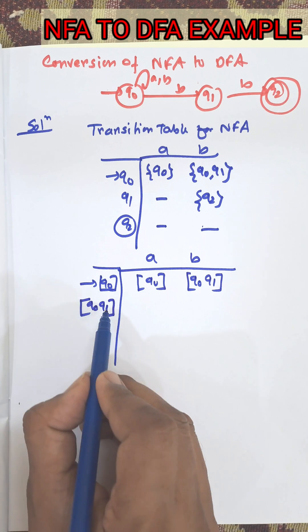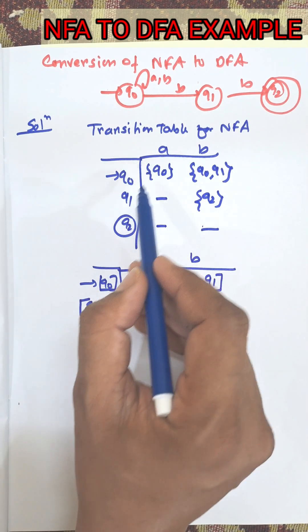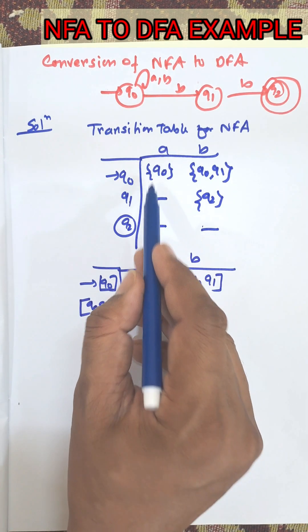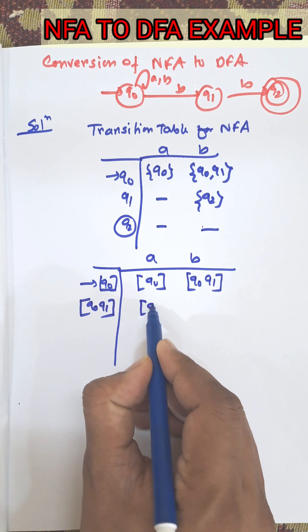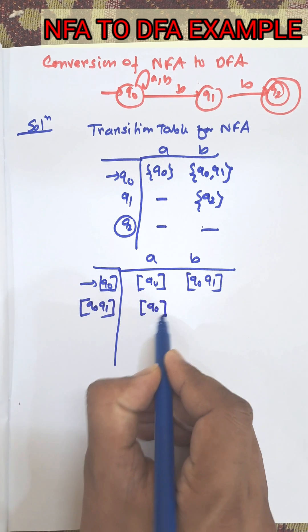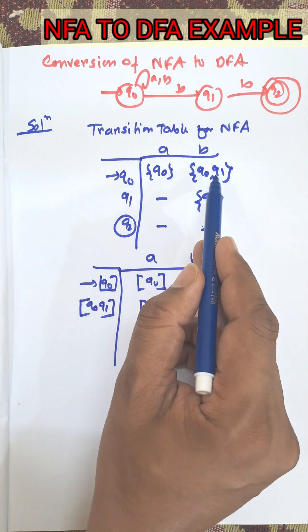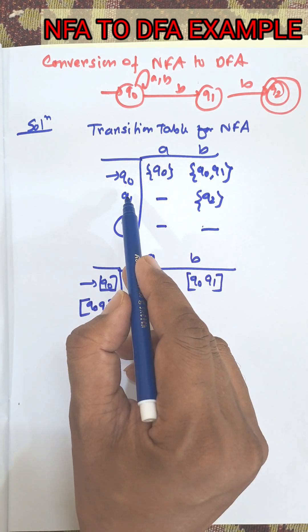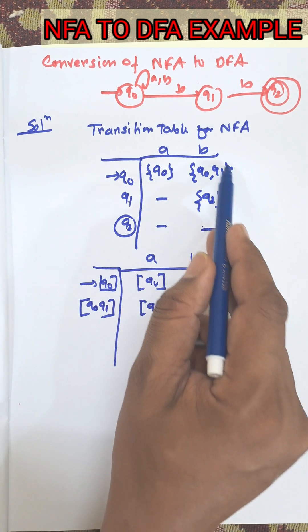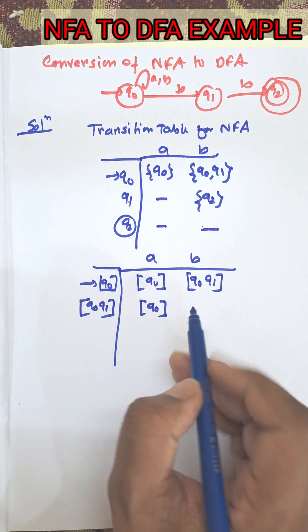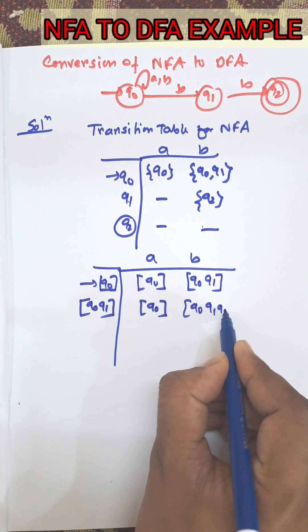From Q0 on input A, the output is Q0. From Q1 on input A, it is empty. So the union of this output is Q0. From {Q0, Q1} on input B: Q0 on B gives Q0 and Q1, and Q1 on B gives Q2. So the union of this output is {Q0, Q1, Q2}.